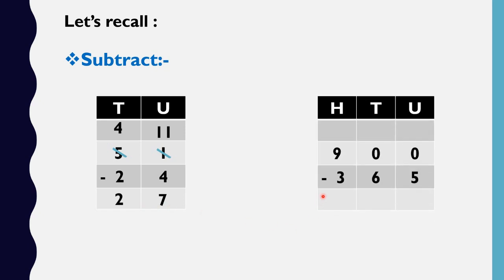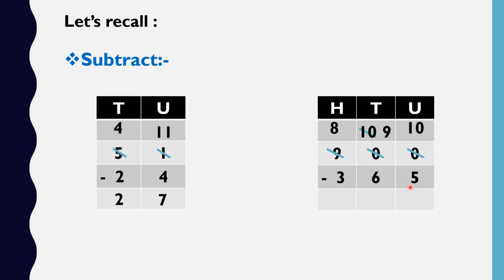Our next sum is 900 minus 365. As you can see in the units place, 5 units cannot be subtracted from 0 units, so now we have to untie one 10. But as you can see, there is 0 in the 10's place, so we are going to untie one 100. That is 9 in the 100's place — if we take 1, it will remain 8. 100 is equal to 10 tens, so it will be 10 tens. Now we have to give 1 to the units place, so 1 ten equals 10 units. In the 10's place it will remain 9, and in the units place it will come 10. So 10 minus 5 — what is the answer?